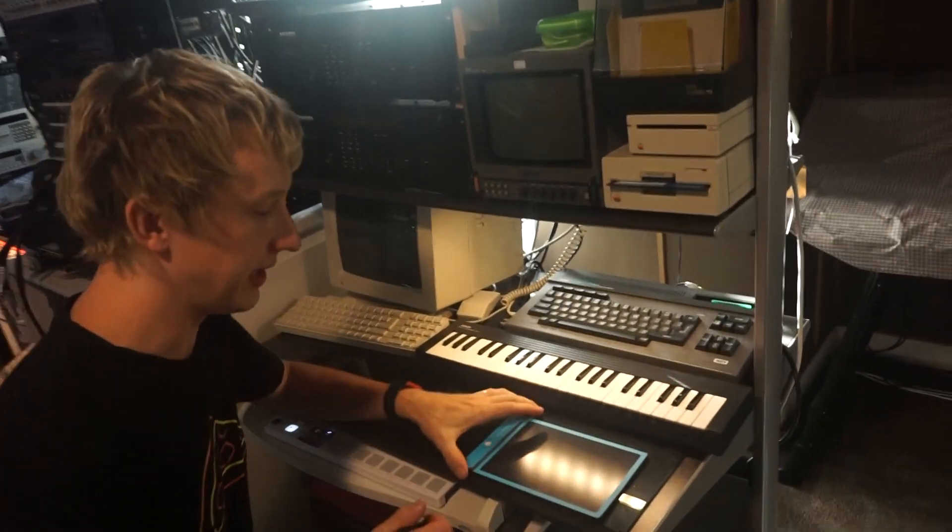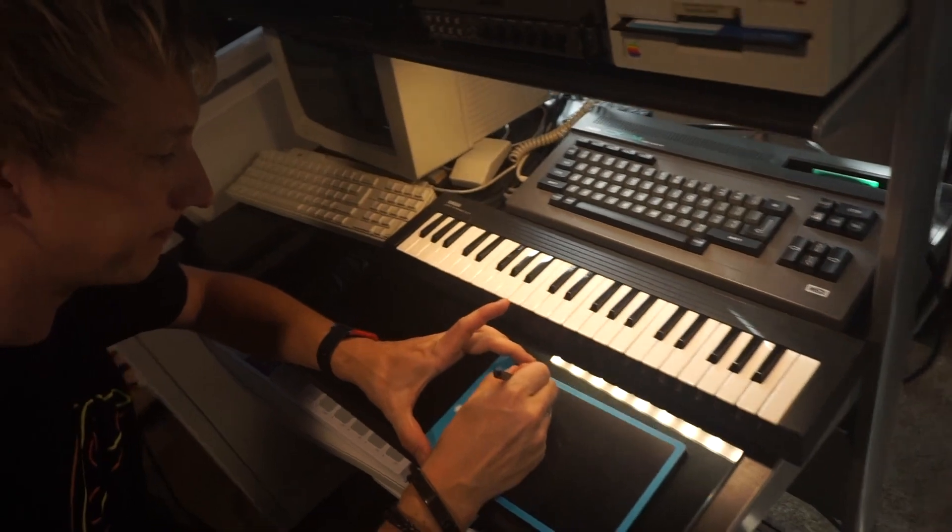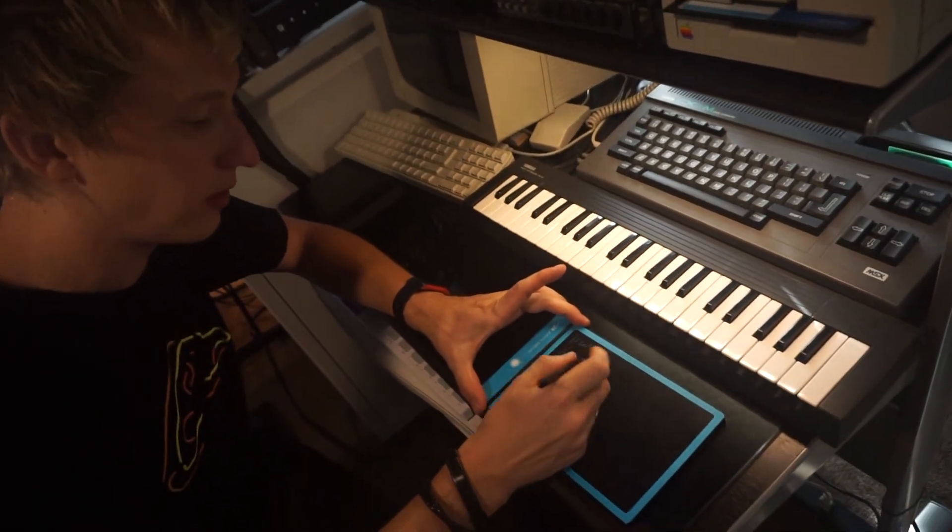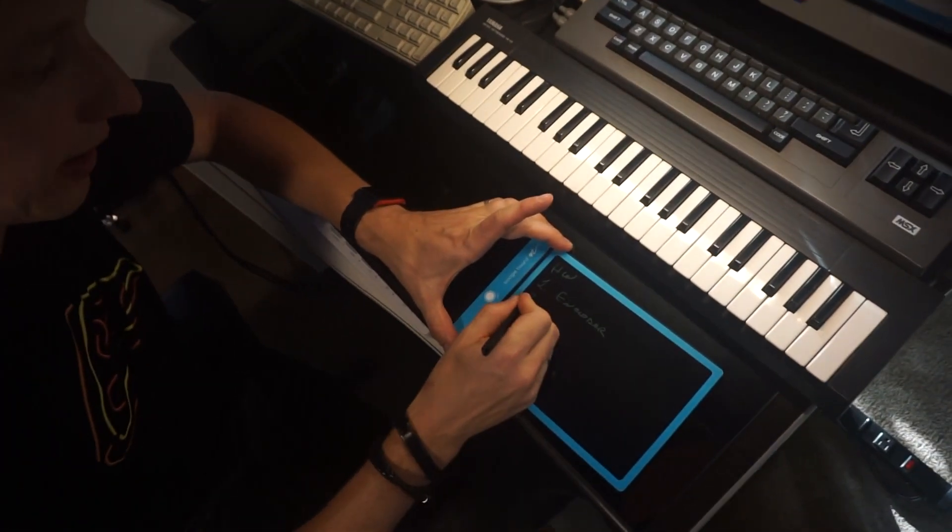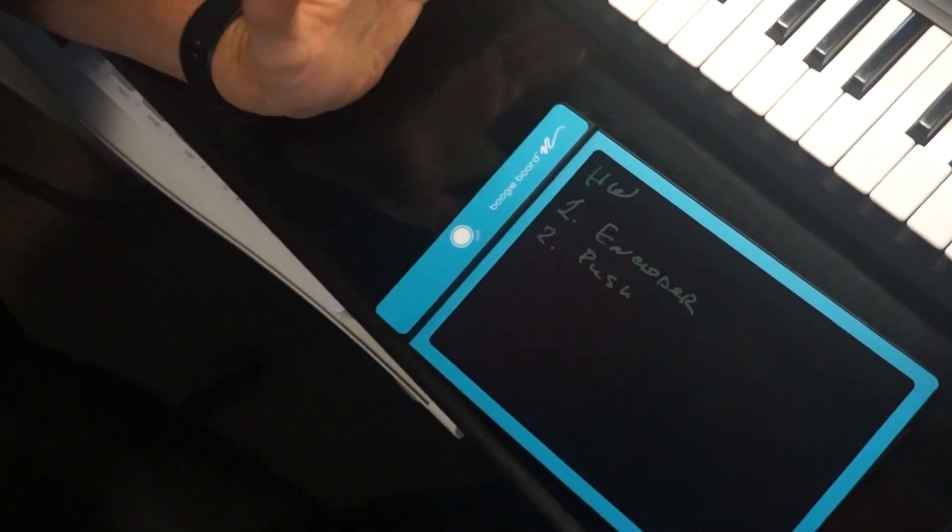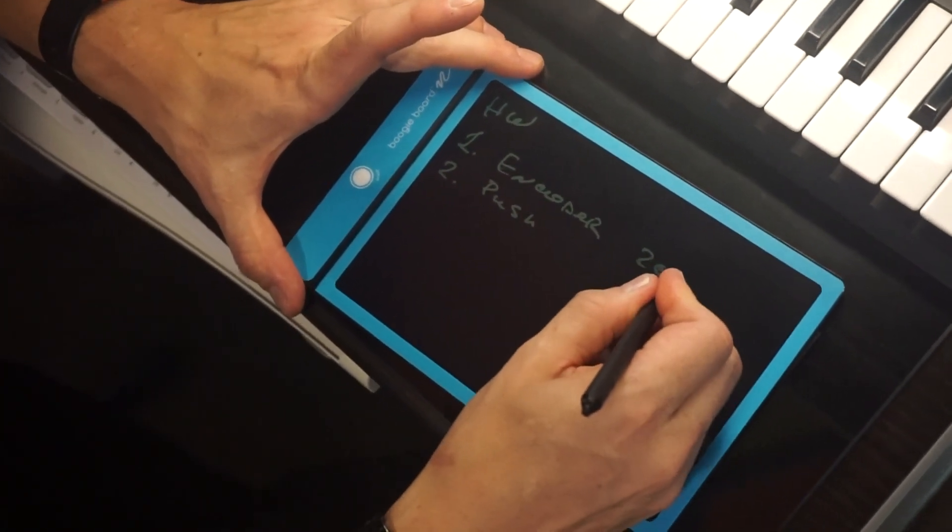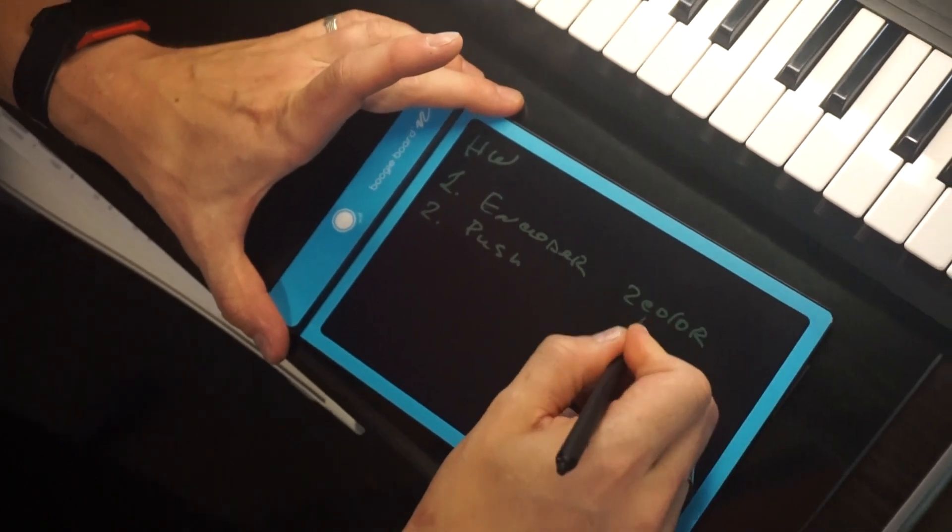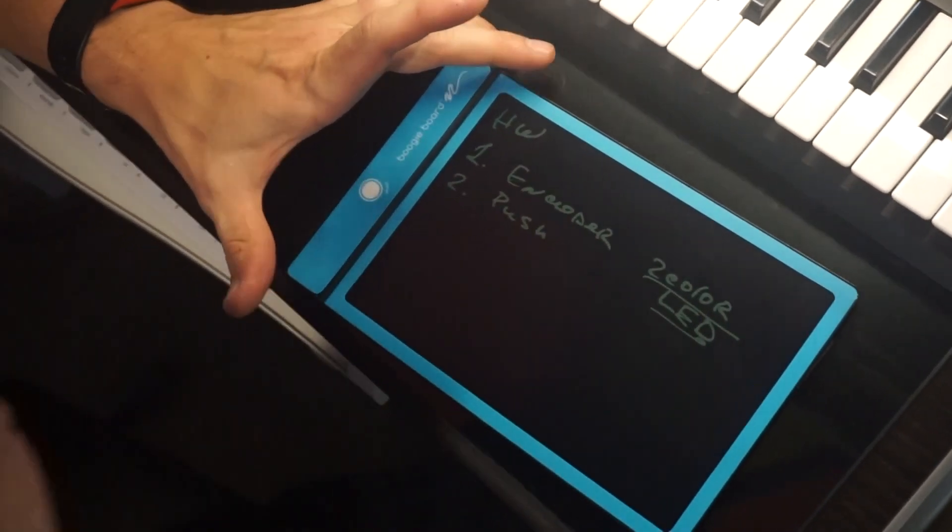So first, it's the hardware. Let's start with the hardware. We have one encoder, we have one push button, which is basically integrated to the encoder, as well as there are two color LEDs integrated into the encoder, which we can configure in many different ways.